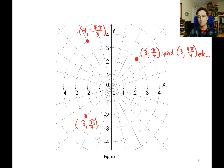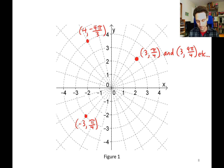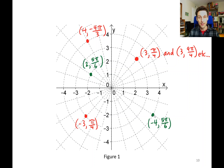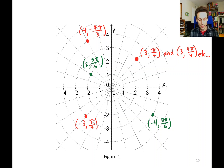Now try plotting (2, 5π/6) — try to figure out where that would be on the coordinate system. You want to rotate the number line to an angle of 5 pi over 6, and then go positive 2 in the r direction along that number line. How about (-4, 5π/6)? You rotate your number line to the 5 pi over 6 direction, and then instead of going positive 2, you go negative 4 — in the opposite direction.